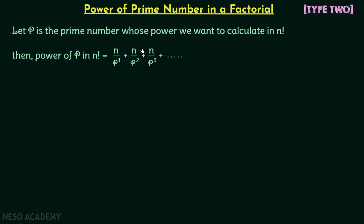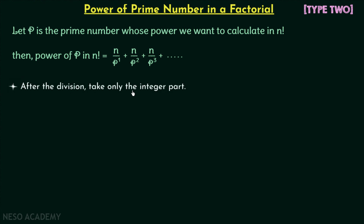Regarding this formula there are two important points. The first point is: after the division, take only the integer part. This means when you perform the division, take the integer part and then do the addition. For example, if n is equal to 7 we will have 7 factorial, and if p is equal to prime number 2, then we need to find the highest power of 2 in 7 factorial.